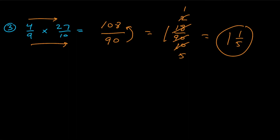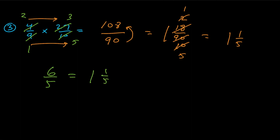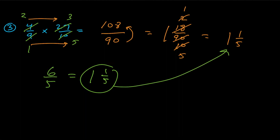Another way is cross-reducing: you can reduce any numerator with any denominator, either top and bottom or on the diagonal. Nine goes into nine once and nine goes into twenty-seven three times; two goes into four twice and two goes into ten five times. Multiplying across: two times three is six, one times five is five, giving us six fifths — which is one and one-fifth, the exact same answer. I prefer reducing numerator and denominator or on the diagonals since it keeps numbers smaller and easier to work with.